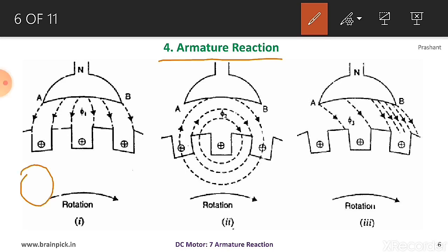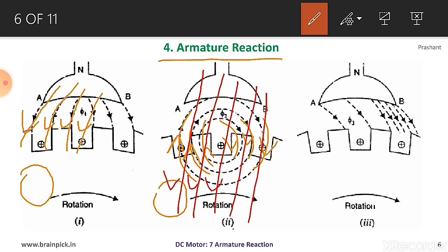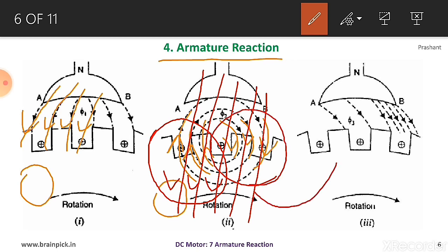Armature reaction takes place when the main field flux and armature flux come in contact with each other. The main field flux passes from north pole going towards south pole. In the armature flux, these are circulating in clockwise direction — going upward on one side and downward on the other. So the two fluxes on the left-hand side cancel each other, and the two fluxes on the right-hand side support each other.